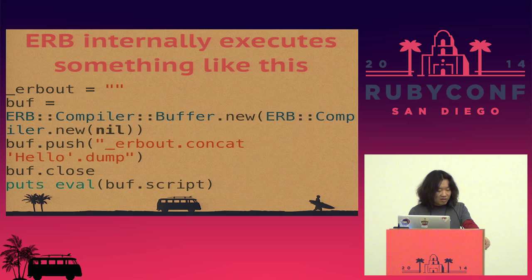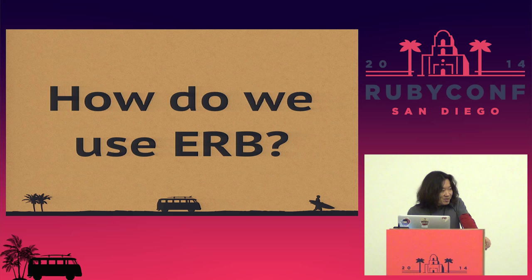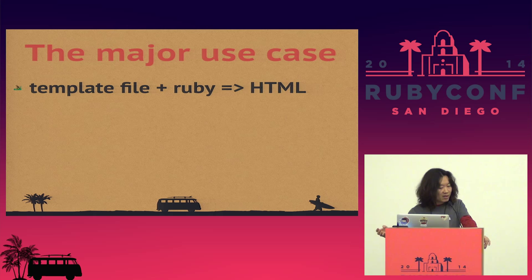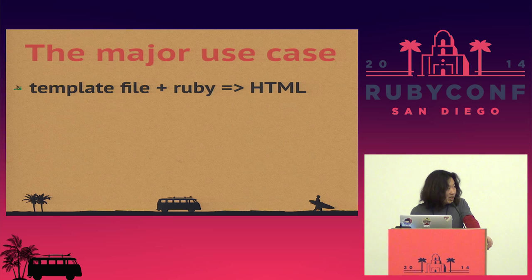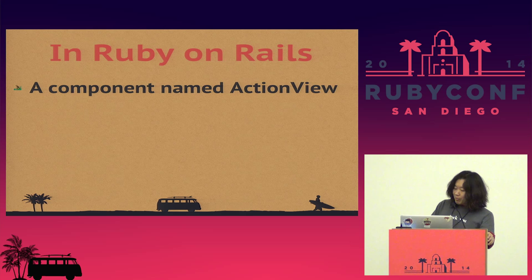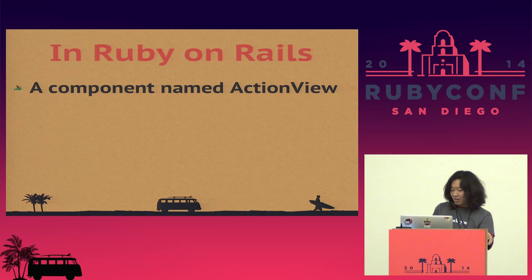This is the basic usage of ERB. How do we actually use ERB in our applications? The major use case is: we use a template file, put it in the application directory, and generate an HTML response body. Mainly on Ruby on Rails, what renders templates is a component named ActionView.